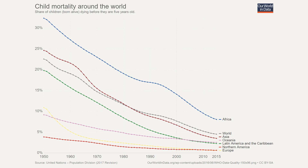Not only are we living longer, child mortality is also decreasing. From the 1950s to today, child mortality in Africa went from 35 percent to somewhere less than 10 percent. Globally, this figure went from 22 to less than 5 percent. So we're living longer, living better, and our children have a better chance to survive.